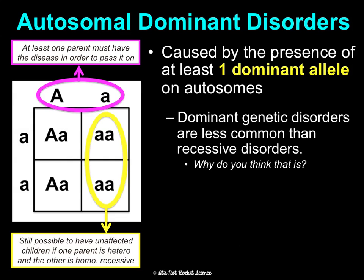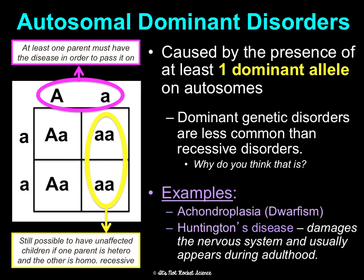They could still have unaffected children if one parent is heterozygous and the other is homozygous recessive. Achondroplasia, which is dwarfism, is an example. If you've watched Little People, Big World on TLC, the two parents are heterozygous — filling in two heterozygous parents gives a 75% chance of dwarf children and 25% non-dwarf. They have four kids and two ended up being dwarfs and two are not. Huntington's disease is also a dominant disorder that damages the nervous system, and it's particularly sad because it usually doesn't appear until adulthood.